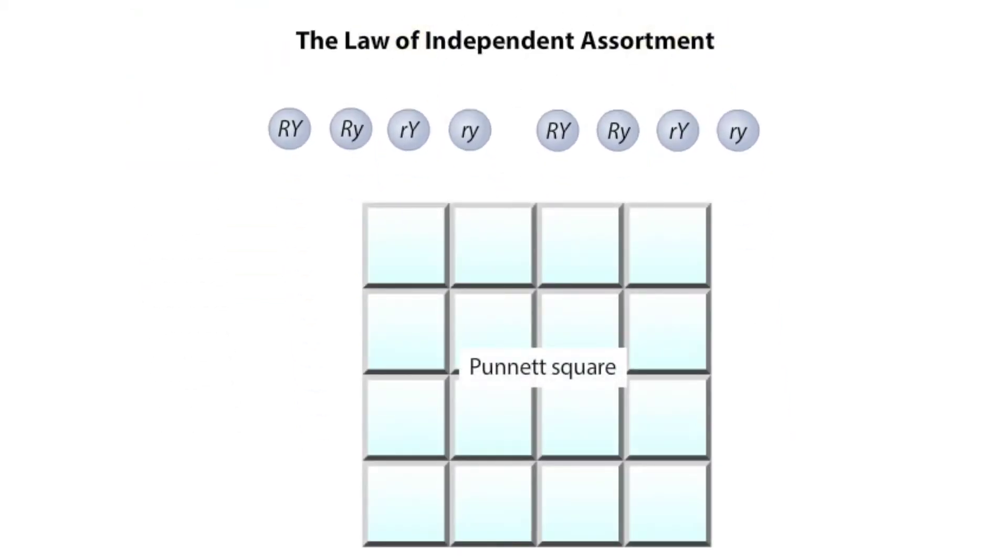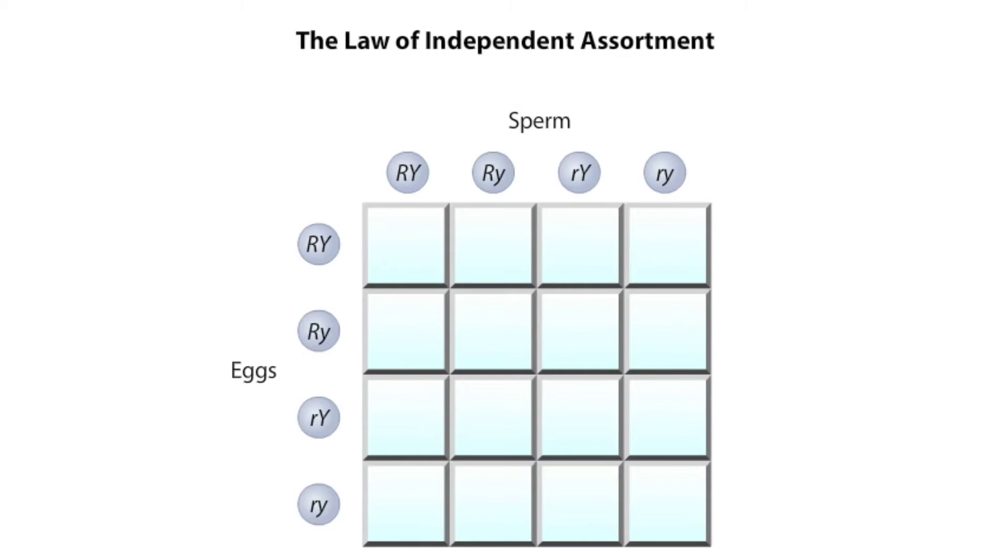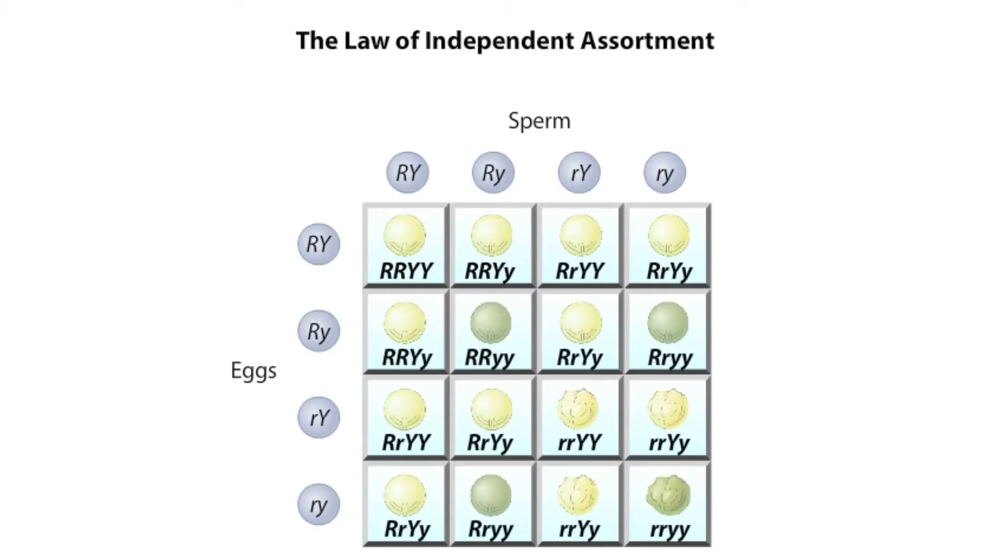A Punnett square is useful in predicting the genotypes and phenotypes in the next generation, the F2 plants. The genotypes of the sperm and eggs are placed along the sides of the Punnett square. Sperm and eggs are then combined systematically within the grid to create diploid individuals. Based on the genotypes in each square, the phenotypes are filled in.